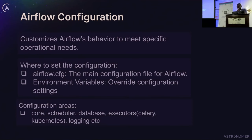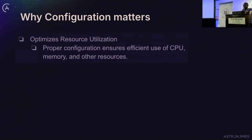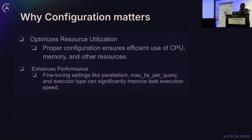We have different configuration areas such as core, scheduler, database, and executors — which include Celery, Kubernetes executor, and others. Why does configuration matter? When you properly configure Airflow, you can be sure that you are making efficient use of your CPU, memory, IO, and other resources. It also enhances performance.